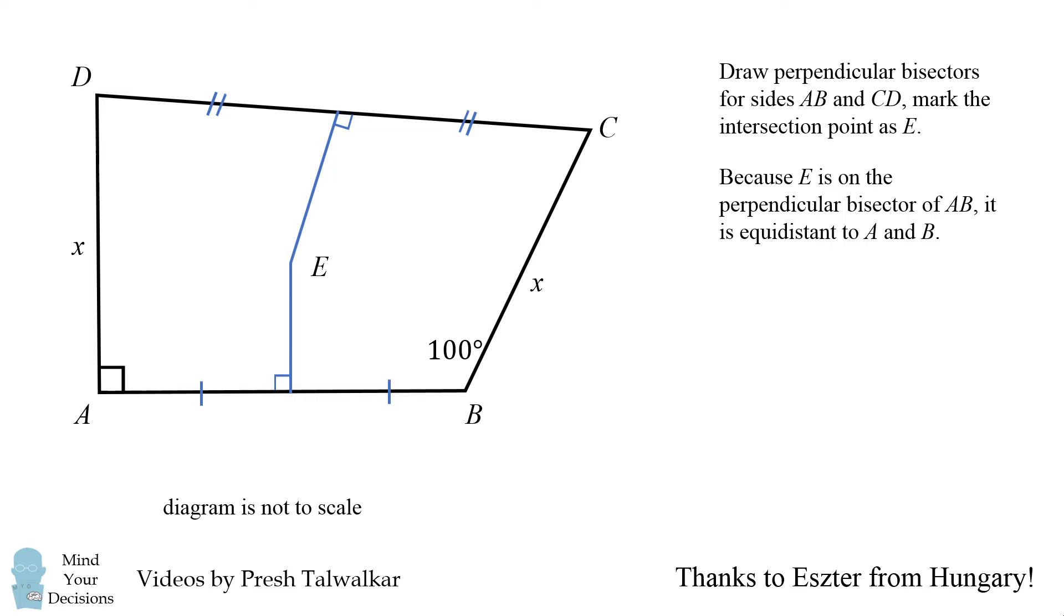Because E is on the perpendicular bisector of AB, it is equidistant to A and B, so these two sides will have the same length which we'll mark as y. Next, because E is on the perpendicular bisector of CD, it is equidistant to C and D, so we'll mark these two sides with the letter z.